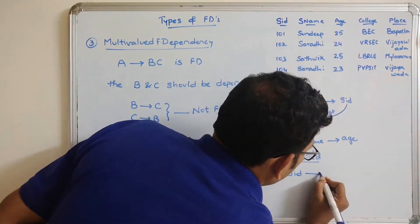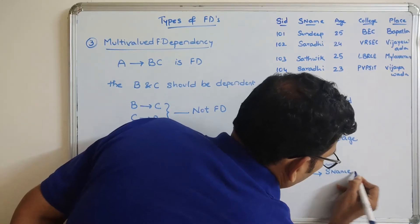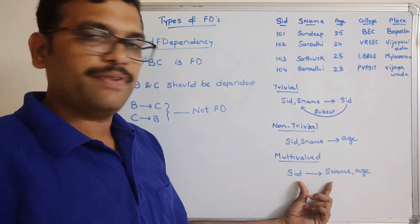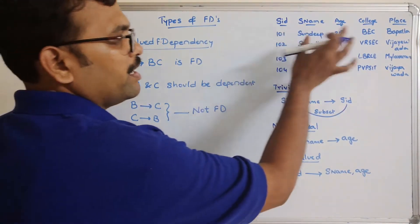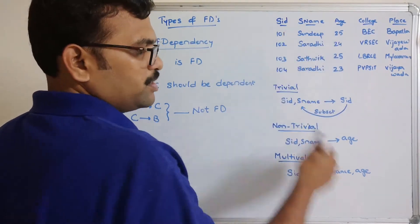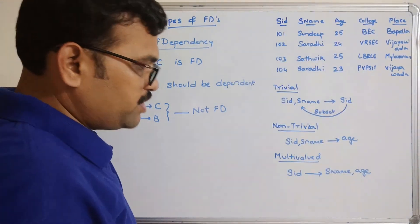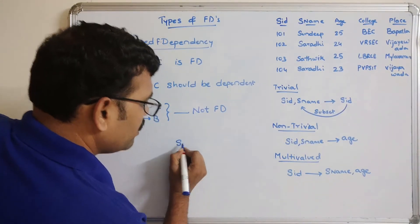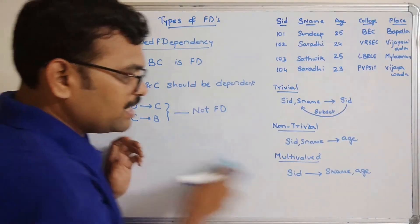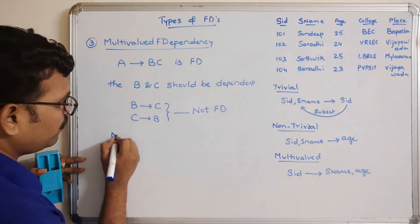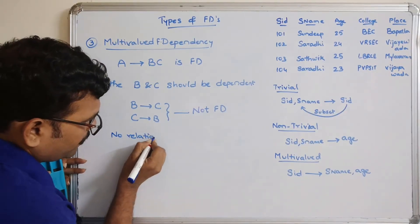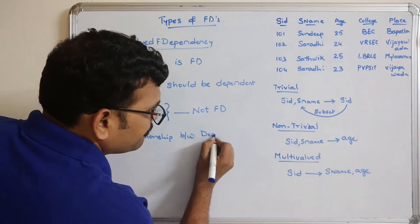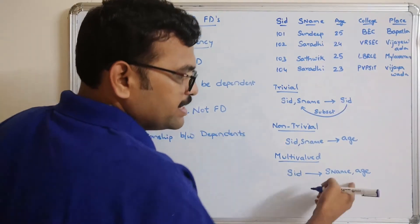For the multi-valued example: SID tends to Sname and Age. With the help of SID, we can get both Sname and Age with no repetition. Now we need to check whether this is multi-valued — there should be no relation between the dependents. The dependent set here is Sname and Age.